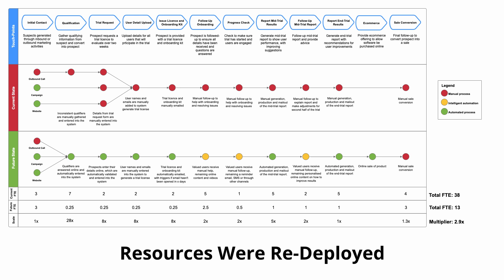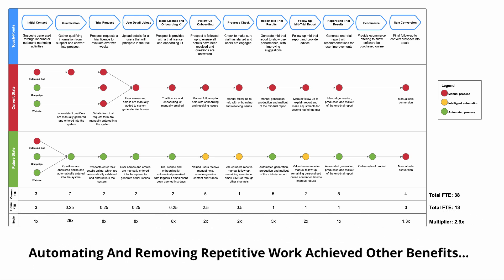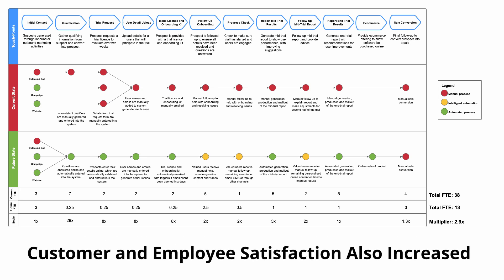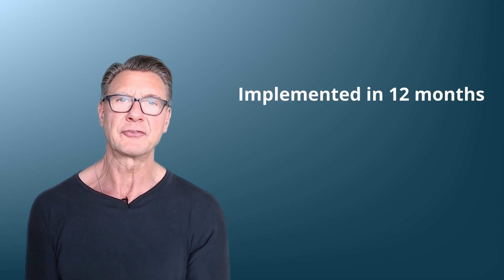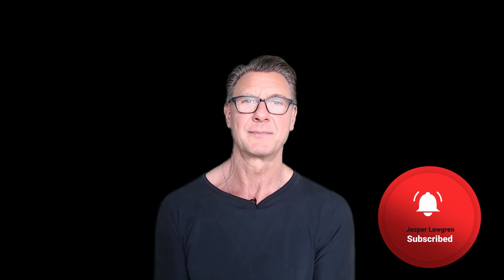The result was a significant reduction in FTEs to operate the process, which were redeployed into other areas of the sales process. Creating scale is about growth and scaling up — it's not really about scaling down and saving costs; there are other ways of doing that. So by automating and removing repetitive work, we achieved a number of things: not only improving the efficiency of the process, we also improved customer satisfaction. The full process was implemented within 12 months, and the entire project paid for itself within 12 months of operation. I hope this has shown the power of scale and what is possible through a data-driven approach. If you enjoyed this video, please like and subscribe. I'll see you in the next video.